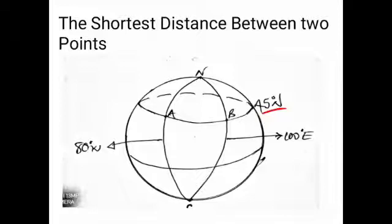We know that we can calculate the distance between A and B using the concept of latitudes, meaning the distance along the circles of latitudes, or we could use the distance along the circles of longitudes. We are going to apply both — the same formulas for calculating the distance between two points along latitude and between two points along longitude will still remain the same.